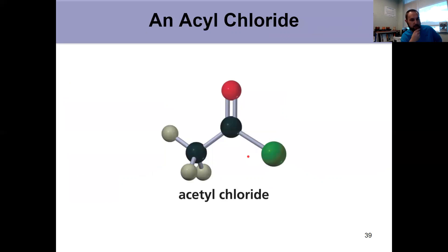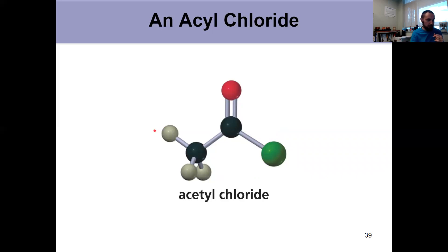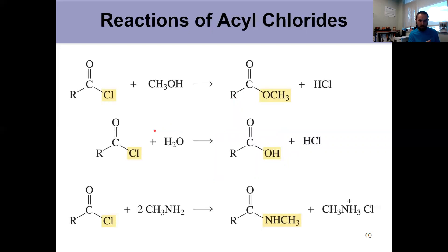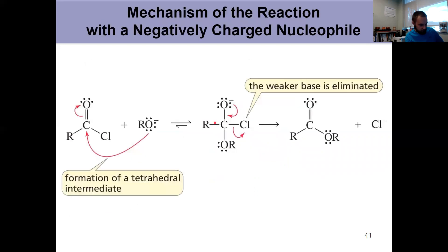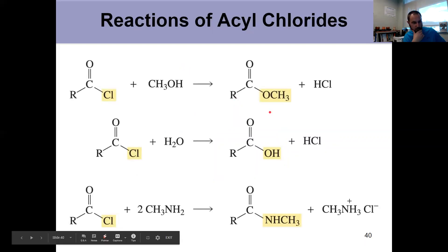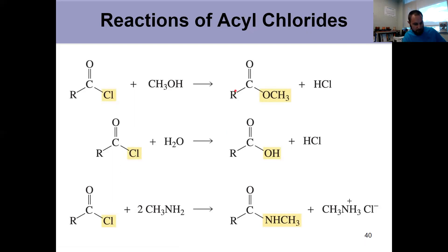Now we'll think about each derivative in turn, starting with acyl chlorides. Acyl chlorides can form carboxylic acids from water, esters from alcohols, and amides from amines — in each case, a nucleophile that's a stronger base than chloride is coming in. All of these reactions on slide 40 follow the same general mechanism; it just depends on whether your nucleophile is neutral or charged. Practice writing these mechanisms out — start with the top two examples on slide 40, pause the video, and come back.